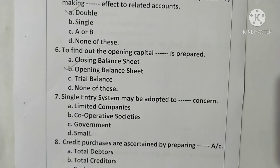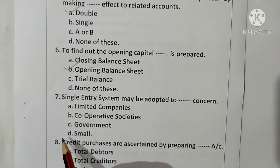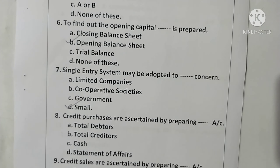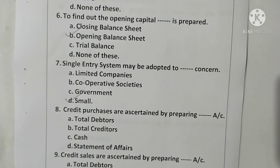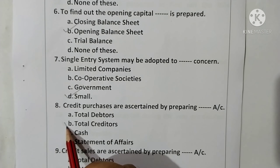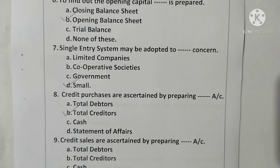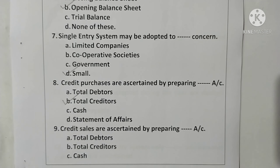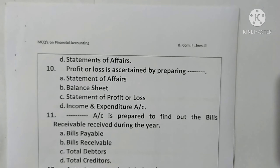Question 7: Single entry system may be adopted by a small concern. Option B is correct. Question 8: Credit purchases are ascertained by preparing a total creditors account. Option B is correct. Question 9: Credit sales are ascertained by preparing a total debtors account. Option A is correct.